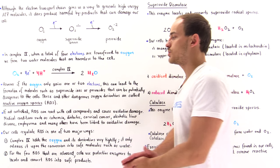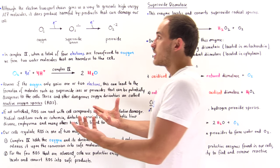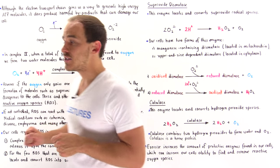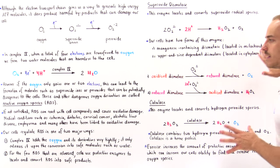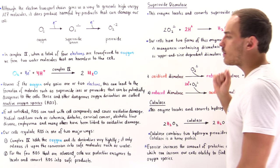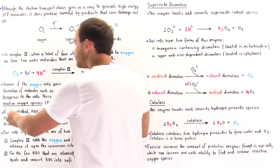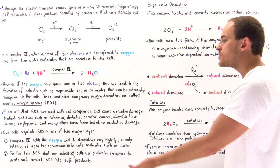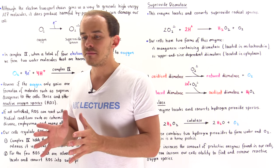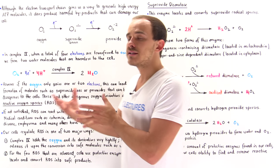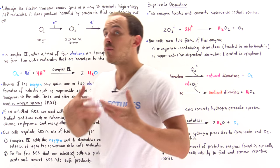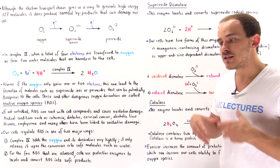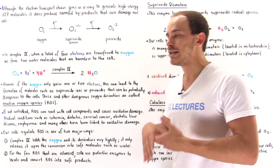The electron transport chain is not a perfect process, and these molecules will in fact form. That is exactly why we have enzymes that can control the formation of these harmful byproducts. If reactive oxygen species are not controlled, ROS can react with cell components and cause oxidative damage. Oxidative damage is linked to the process of aging — we age partially as a result of these reactive oxygen species. On top of that, oxidative damage has also been linked to a variety of different medical conditions and abnormalities.